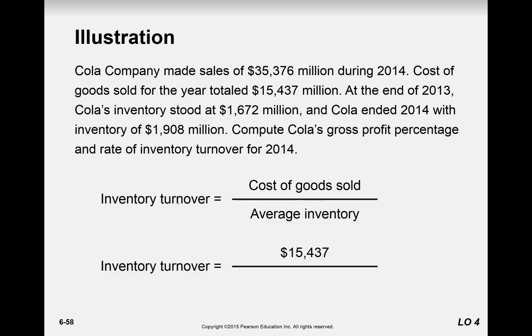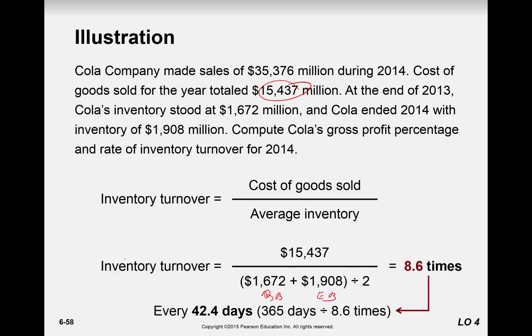For inventory turnover using the same data, we know our cost of goods sold, and we have the beginning and ending inventory balances. We divide the sum of those balances by 2 to get average inventory, and the result is 8.6 times. Taking 365 divided by 8.6 gives us 42 days, meaning an average inventory item stays in inventory about 42 to 43 days.